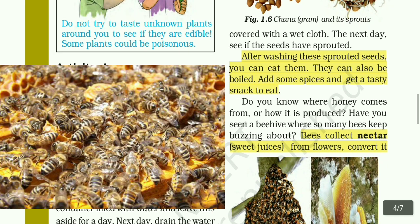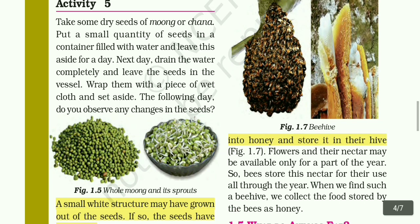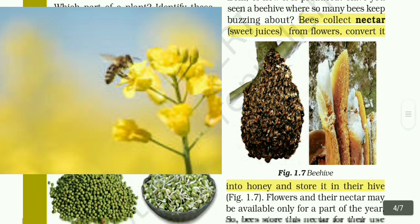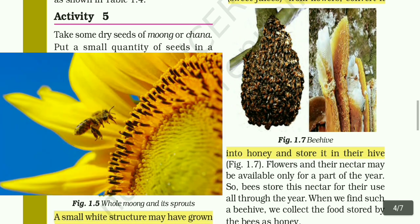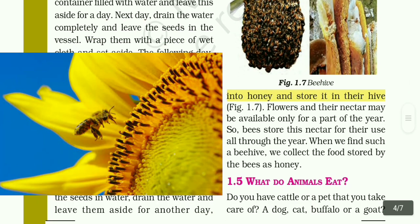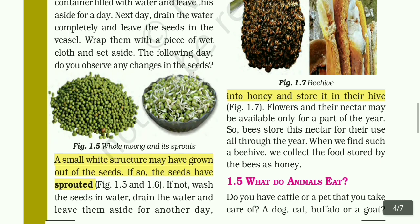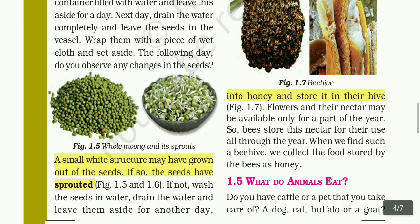Do you know where honey comes from or how it is produced? Have you seen a beehive where so many bees keep buzzing? Bees collect nectar from flowers, convert it into honey, and store it in their hive. Flowers and nectar may be available only for part of the year, so bees store this nectar for their use all through the year. When we find such a beehive, we collect the food stored by the bees as honey.